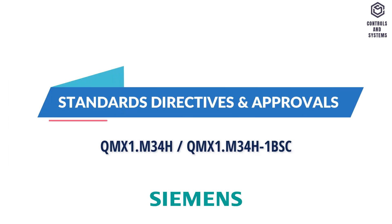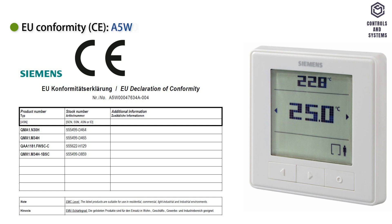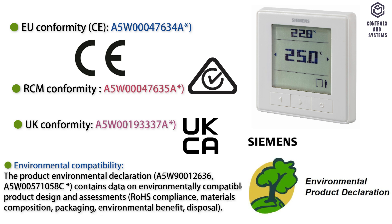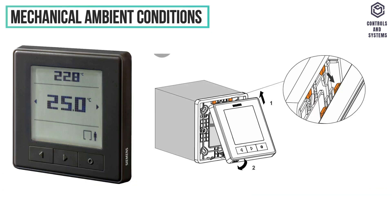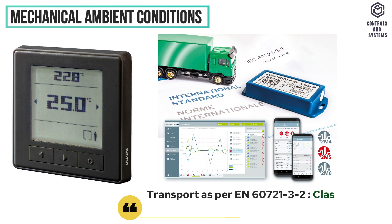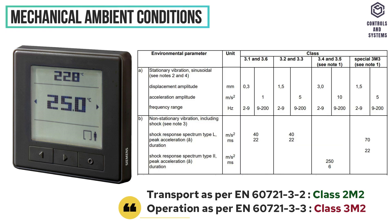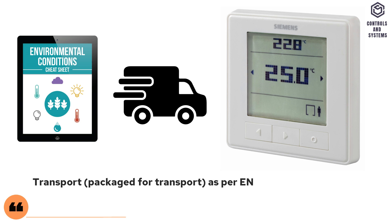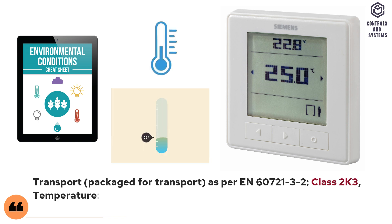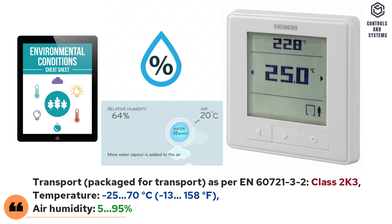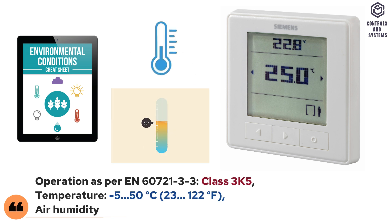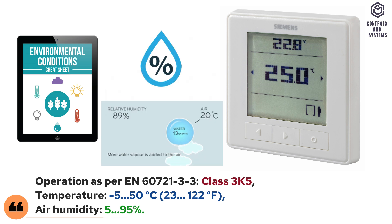Standards, directives and approvals: EU conformity CE, RCM conformity, UK conformity, environmental compatibility. Mechanical ambient conditions: transport is class 2M2, operation is class 3M2. Climatic ambient conditions: transport is class 2K3, temperature minus 25 to 70 degrees Celsius, air humidity 5 to 95 percent. Operation is class 3K5, temperature minus 5 to 50 degrees Celsius, air humidity 5 to 95 percent.